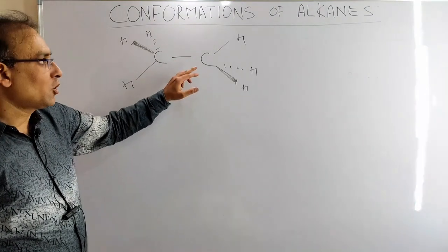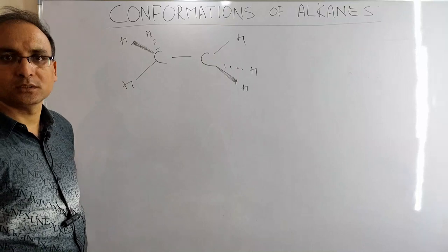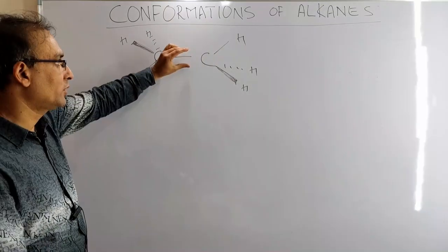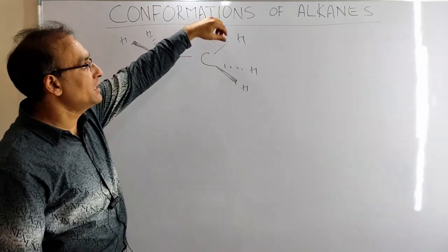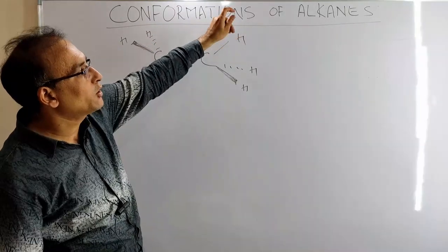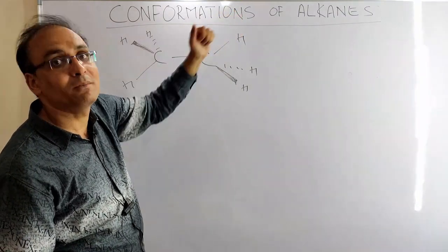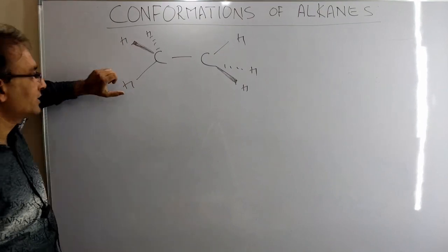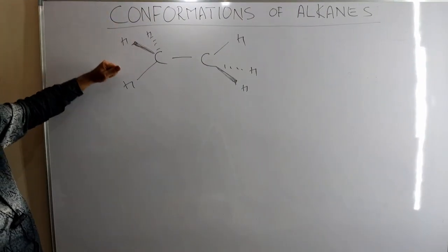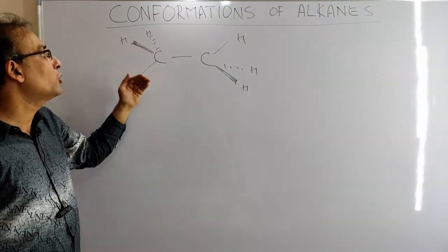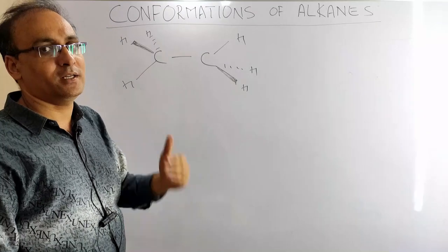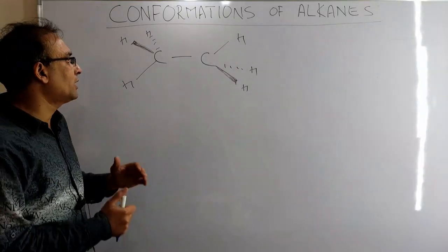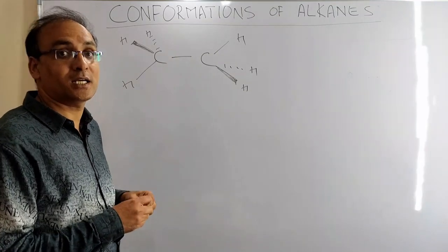Ethane has two carbon atoms, and on both carbons there are three hydrogens. This carbon-carbon bond can rotate on its own axis without touching anything. If you rotate one hydrogen, like a ball on a stick, there is no observable difference. But if you hold this hydrogen and rotate through this bond, you start seeing observable differences — and those differences are called different conformations. It's very important to first understand how the molecule looks.